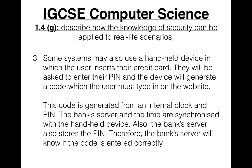Some systems may also use a handheld device in which the user inserts their credit card — we usually see these in restaurants when paying for food with a credit card. The waiter comes with one of those machines, the PIN is input, and the device will then generate a code which the user must type in on the website. The code is generated from an internal clock and the PIN, and the bank's server and the time are synchronized with the handheld device. The bank's server also stores the PIN, so it will know if the code is entered correctly.